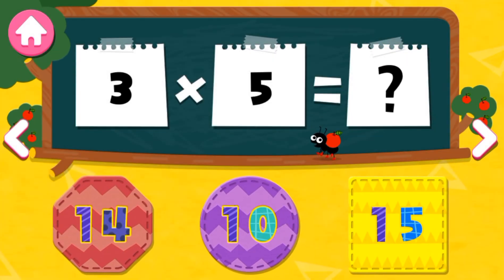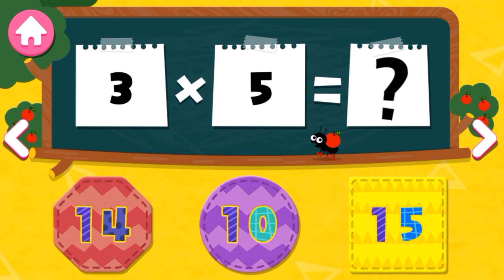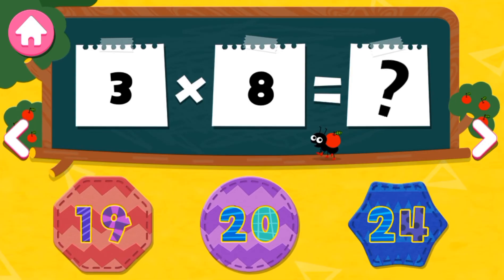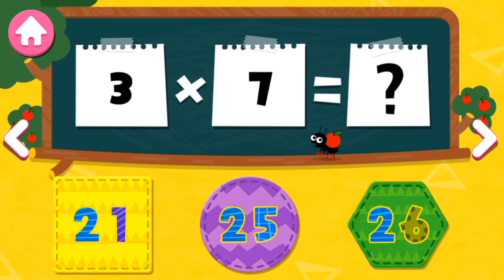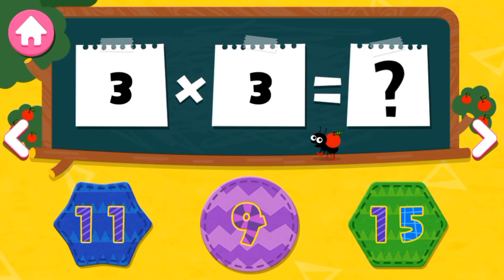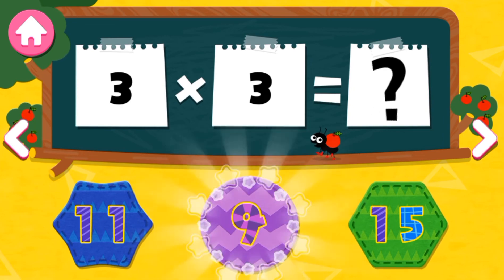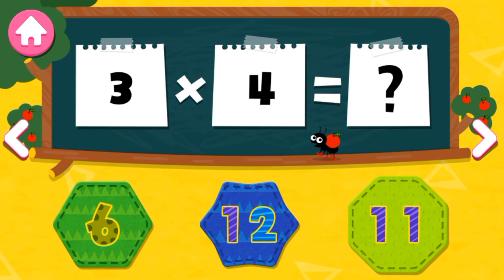3 times 5 is... 15. 3 times 8 is... 24. 3 times 7 is... 21. 3 times 3 is... 9. 3 times 4 is... 12.